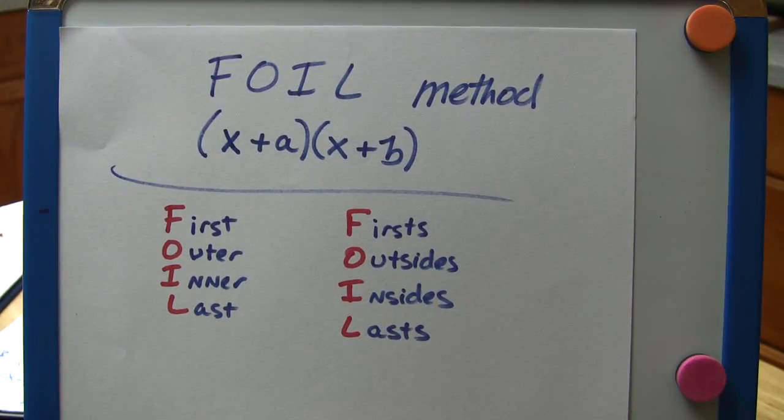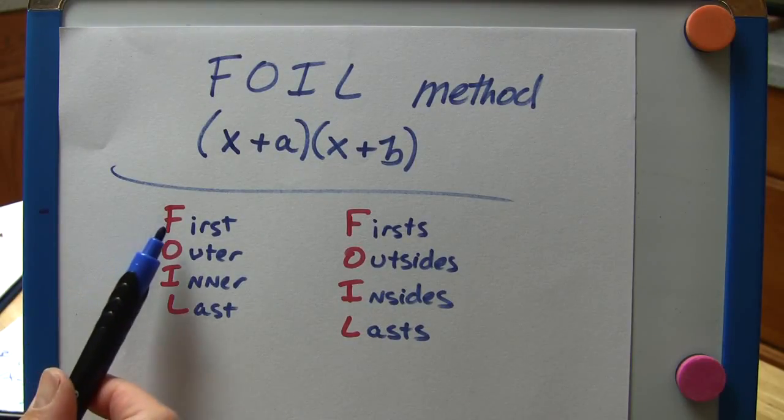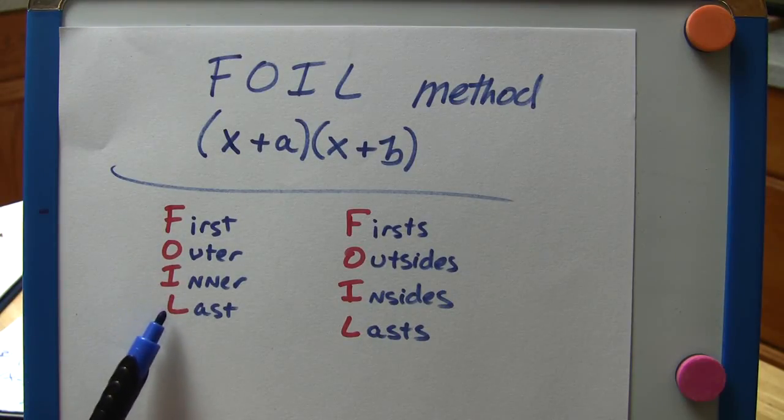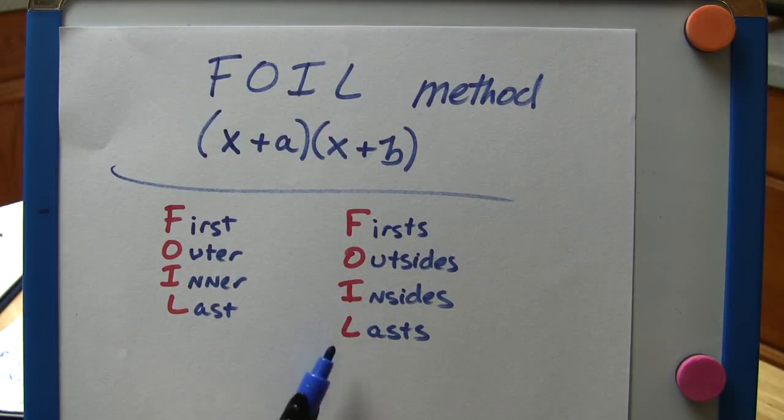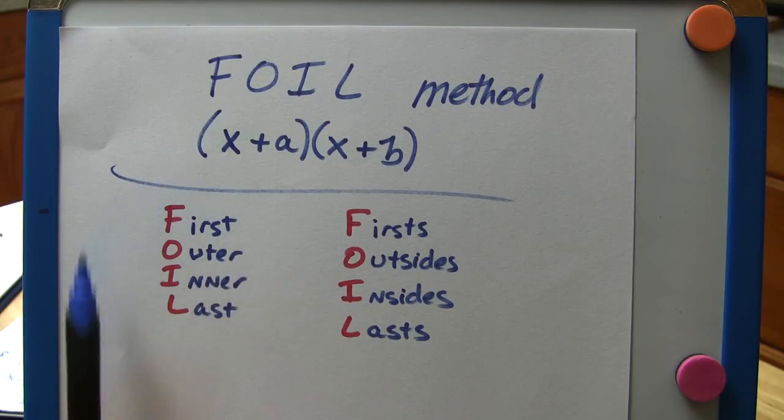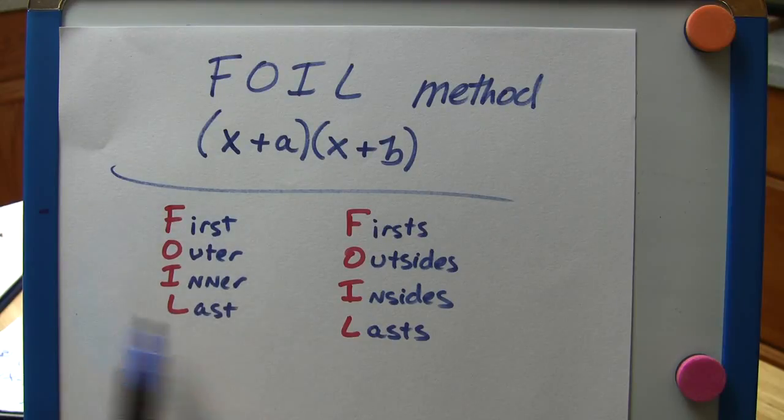In this video, we're going to go over FOIL, or the FOIL method for multiplying two binomials. FOIL stands for First, Outer, Inner, Last, or Firsts, Outsides, Insides, Lasts. In the United States, it's most commonly taught this way.